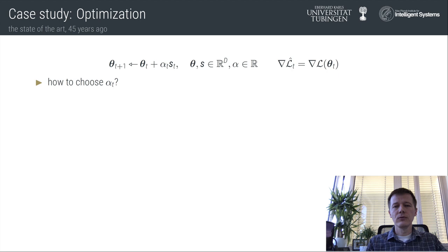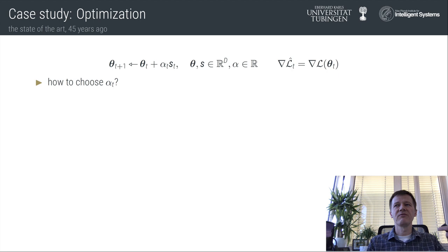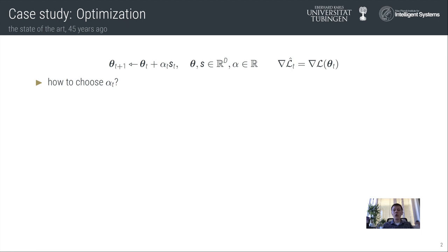Let's assume we know which direction we want to step into. How do we set the step size — the learning rate? There's a simple answer found in textbooks like Bertsekas or Nocedal and Wright, and it's called a line search. You keep the step direction constant, solving essentially a one-dimensional problem. You take an initial step and extend it exponentially until the gradient flips, then do a spline interpolation to find the minimum. You keep doing this until the gradient is sufficiently flat and the function value sufficiently low — these are the two Wolfe conditions to terminate the search.